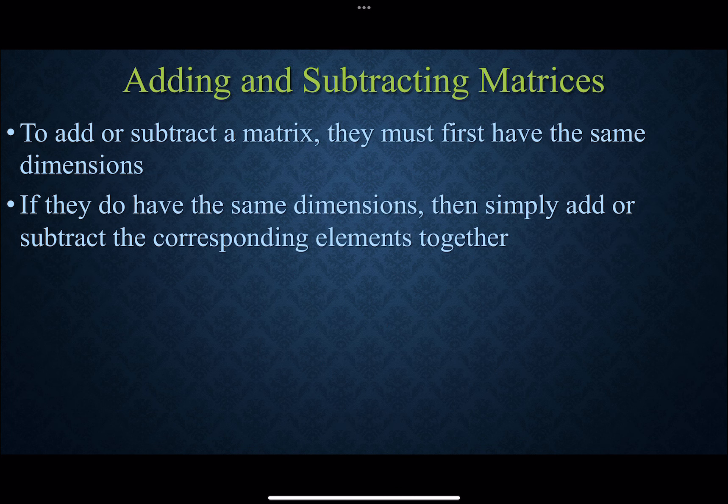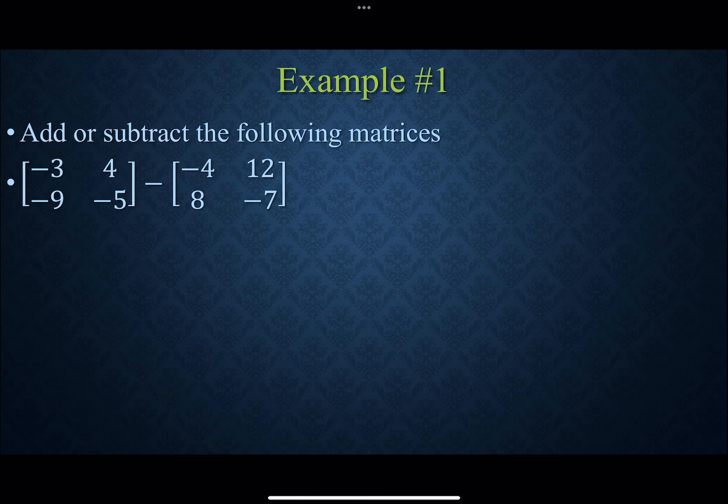Now when it comes to your basic adding and subtracting, we just simply need to make sure they're the same size matrix, same dimensions. Assuming they are, we just add and subtract the corresponding elements together. Very simple, very straightforward. So I have 2 by 2 matrices right here, so I can actually subtract them.